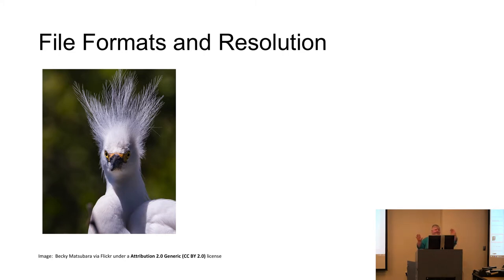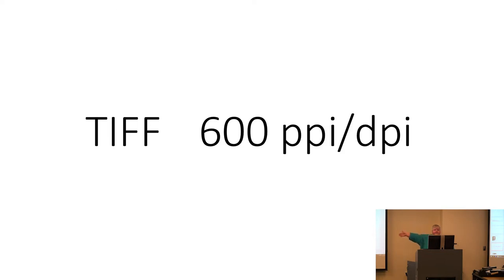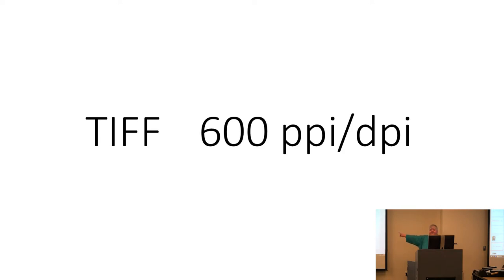Here's my quick and dirty recommendation: make it a TIFF file — tagged image file format — and scan it at 600 DPI. That's your preservation copy of your item. If you set the scanner to give you a TIFF file at 600, you will be able to do whatever you want ultimately. If you want to let a researcher print it in their book — which is what we get requests for a lot — you'll definitely be able to do it.